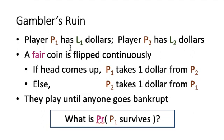Assume that we have two players, player 1 P1 and player 2 P2. P1 has L1 dollars initially, and P2 has L2 dollars initially. They are going to play the following game: we flip a fair coin repeatedly. If heads comes up, player 1 takes one dollar from P2. Otherwise, if tails comes up, player 2 takes one dollar from player 1. The two players will play until one of them goes bankrupt, meaning one of them has no dollars left. What is the probability that P1 survives this game?